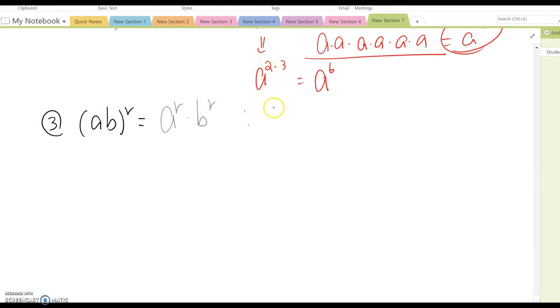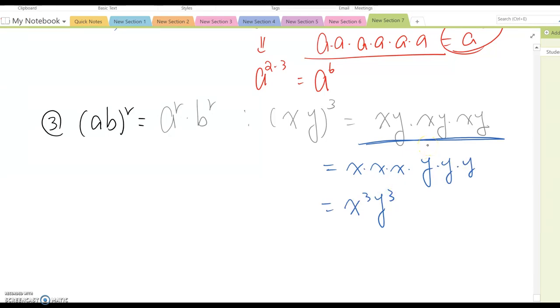Look at one example. Let's say X, Y to the 3rd power which means you are multiplying XY and XY and XY. So, now we gather same term together. Then this becomes X times X times X, and Y times Y times Y. So, become X cubed and Y cubed. Shortcut. Distribute this power to both X and Y then become X cubed and Y cubed.